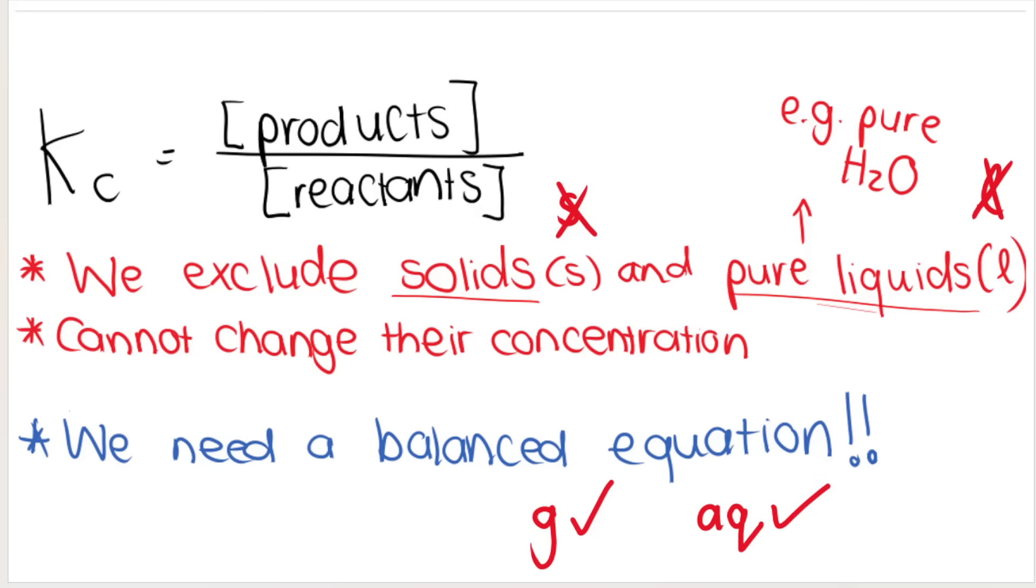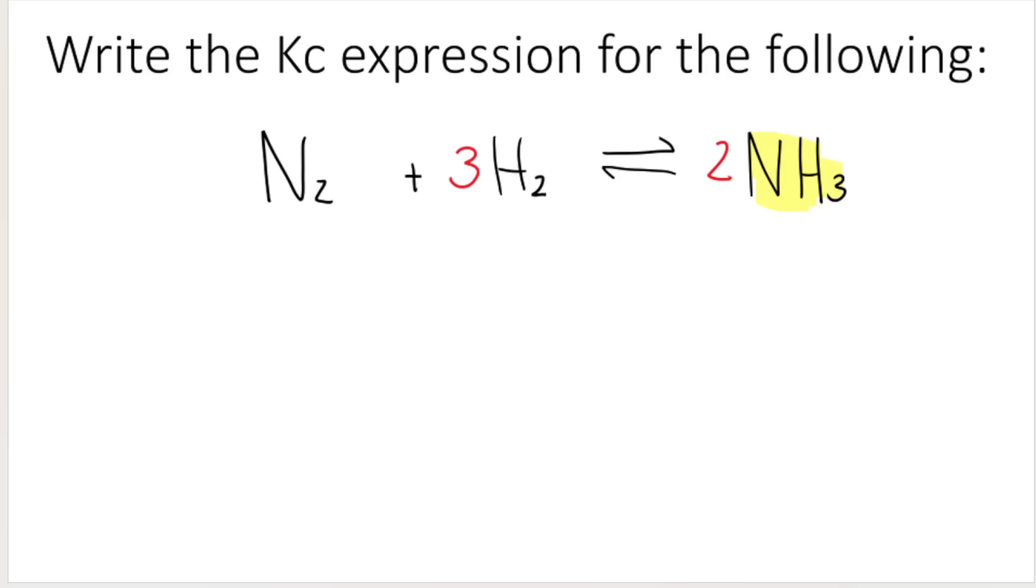It's very important that we have a balanced equation. So let me show you how to quickly write a Kc expression for a simple equation like this. As I've mentioned, Kc is equal to the concentration of products divided by the concentration of reactants. And remember, the square brackets represent concentration.